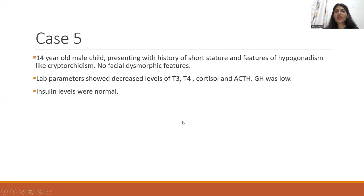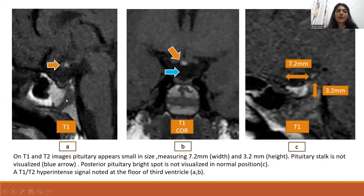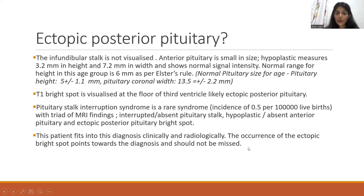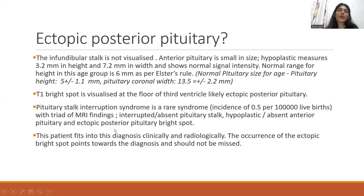Case 5 is a 14-year-old male child presenting with short stature, features of hypogonadism, low levels of T3, cortisol and ACTH; GH was low, insulin normal. The anterior pituitary is small in size, the stalk is absent, and there is an abnormal location of the posterior pituitary bright spot at the base of the third ventricle. This is an ectopic posterior pituitary, pointing toward pituitary stalk interruption syndrome — a rare syndrome with incidence of 0.5 per 100,000, with a triad of MRI findings: interrupted pituitary stalk, hypoplastic anterior pituitary, and ectopic posterior pituitary bright spot. The occurrence of the bright spot is diagnostic and should not be missed.